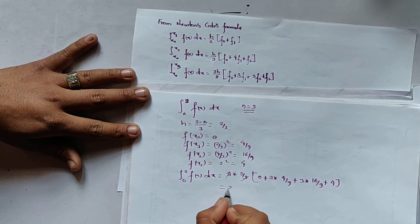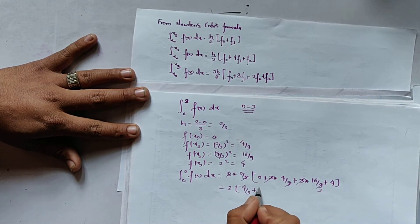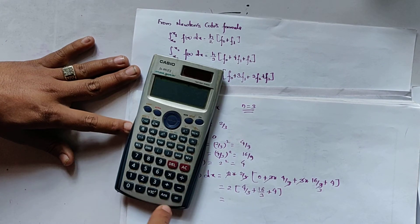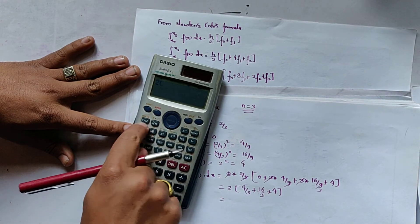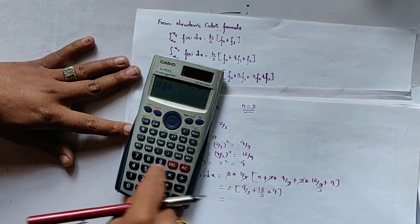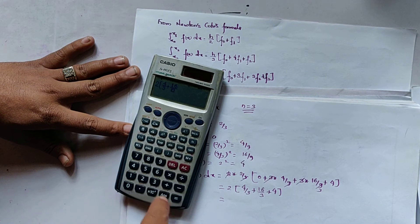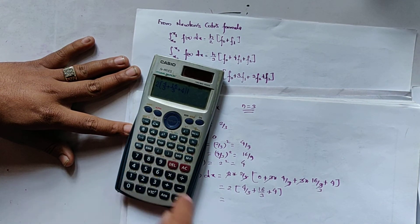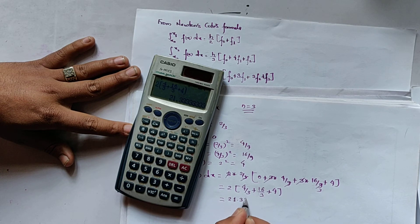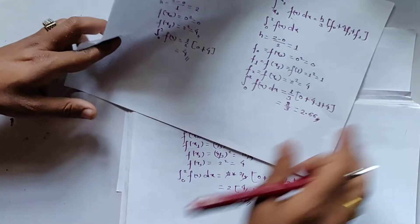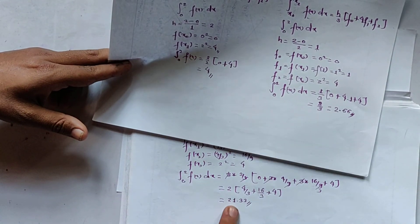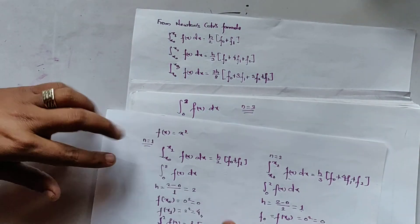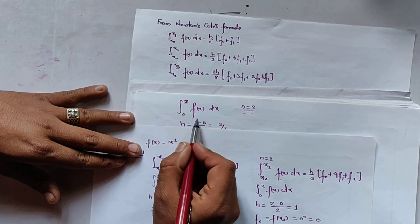Computing: 2 × (4/3 + 16/3 + 4) gives approximately 21.33. So we get three different values: 4, 2.66, and 21.33 using the three Newton-Cotes formulas to find the integration of f(x).